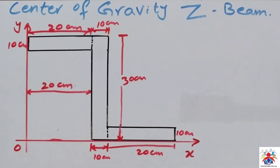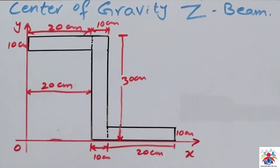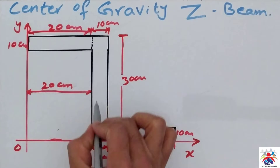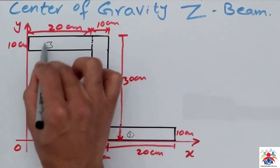Hello and welcome to my YouTube channel. In this video I am going to explain how to calculate the center of gravity of a Z-beam. As you can see in the diagram, we have a beam that looks like a Z shape. In order to calculate the center of gravity, we have to divide it into three pieces, as shown in the drawing: shape one, shape two, and shape three.